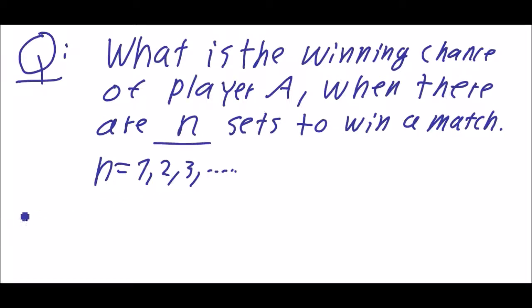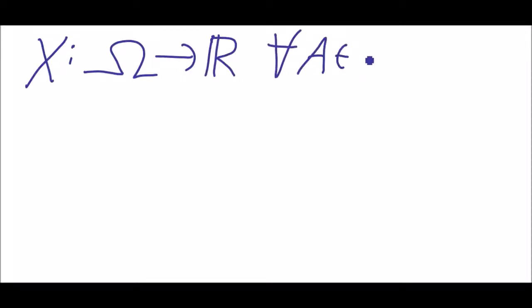In order to do that we have to make a little bit more theory about random variables. Let's recall what we understand under random variables. X is a map from omega to R and it respects the sigma algebra. That means for all A in B^1, the Borel subsets of R, we have x to the minus 1 of A is in our sigma algebra F.